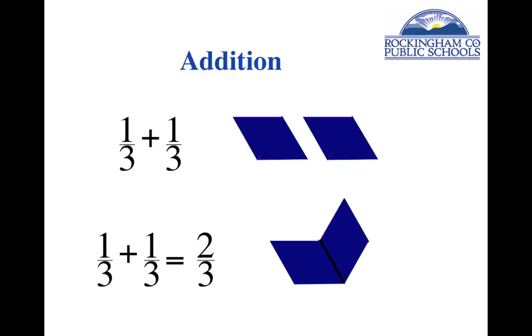Imagine if you did make the mistake of adding the numerators and the denominators both. We would get an answer of two sixths, which would be two greens. And obviously, we've got more than two greens here. We've got two blue shapes. So again, one third plus one third is two thirds.